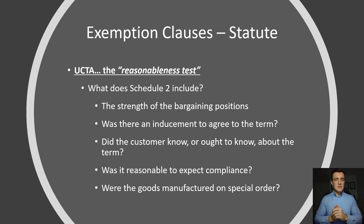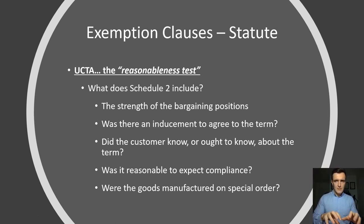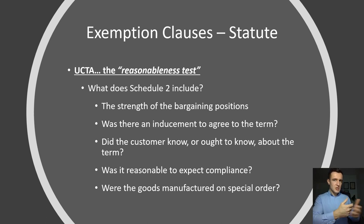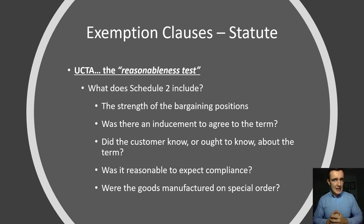The fourth Schedule 2 factor is whether it was reasonable to expect compliance with such a term given the nature of the contract. And the fifth: were the goods manufactured to a special order — a bespoke, one-off piece of machinery — rather than simple off-the-shelf goods? If the work is specialist in nature, there may be an added ability to include an exemption clause. To reiterate: none of these five factors outweighs the others — it is a five-way balancing act, and they are ultimately just guidelines for the court to apply in arriving at the decision as to whether or not an exemption clause is reasonable.